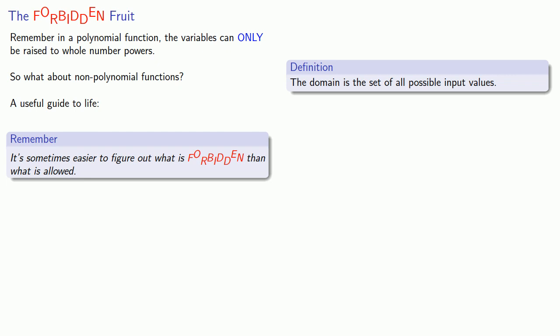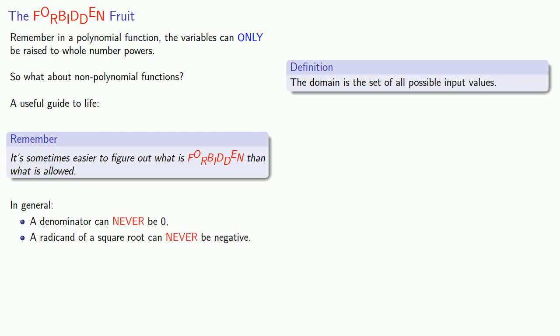In general, a denominator can never be zero. And also, the radicand of a square root can never be negative.